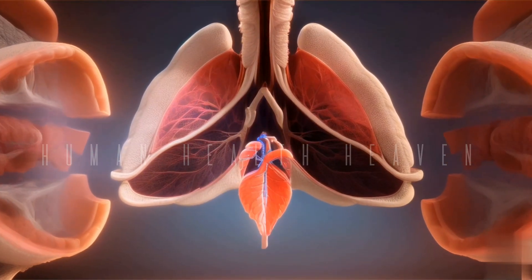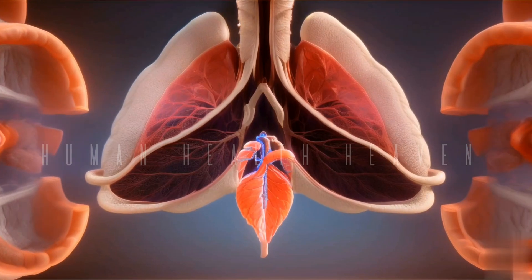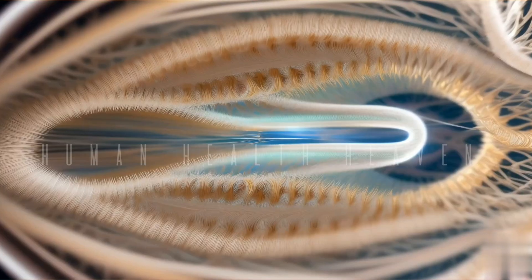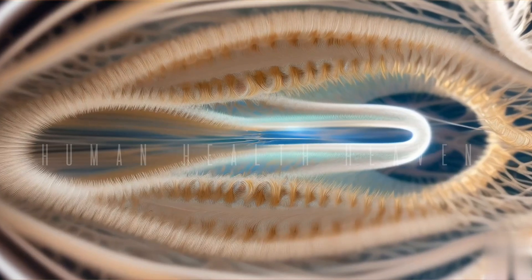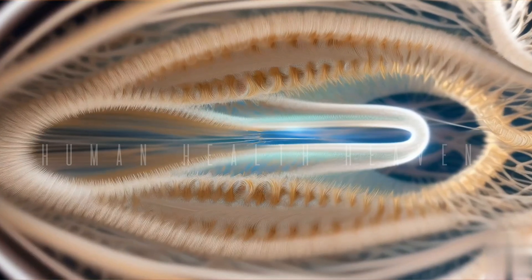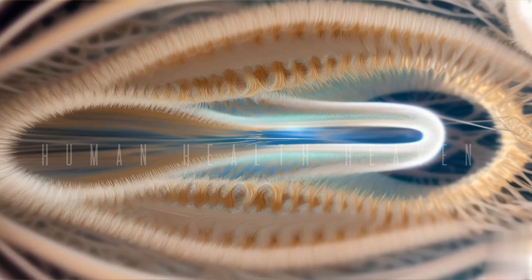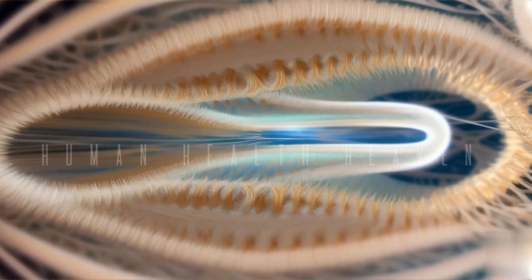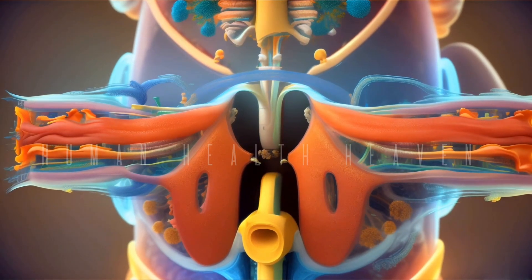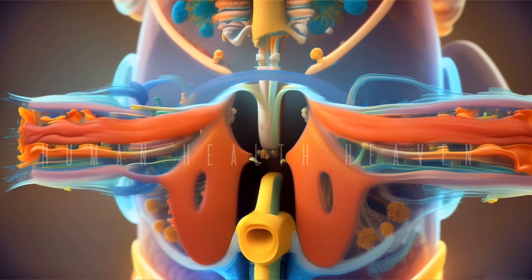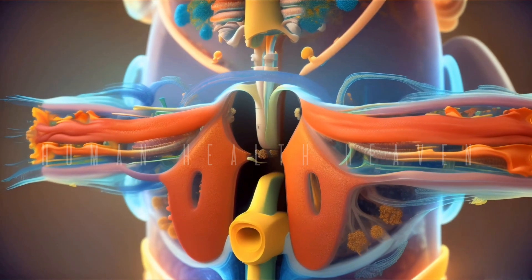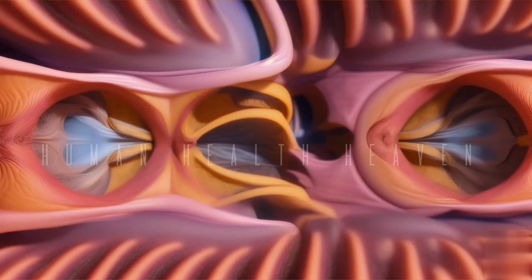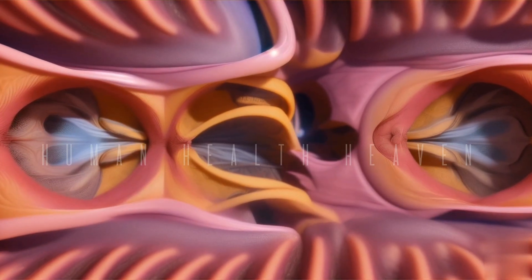Subdivision: inside the lungs, the primary bronchi further divide into smaller tubes called bronchioles, forming a branching network known as the bronchial tree. Cartilaginous structure: the walls of the bronchi contain rings of cartilage, which provide structural support and prevent collapse during breathing. Smooth muscle: bronchi are surrounded by smooth muscle that allows for controlled constriction or dilation, regulating the airflow.